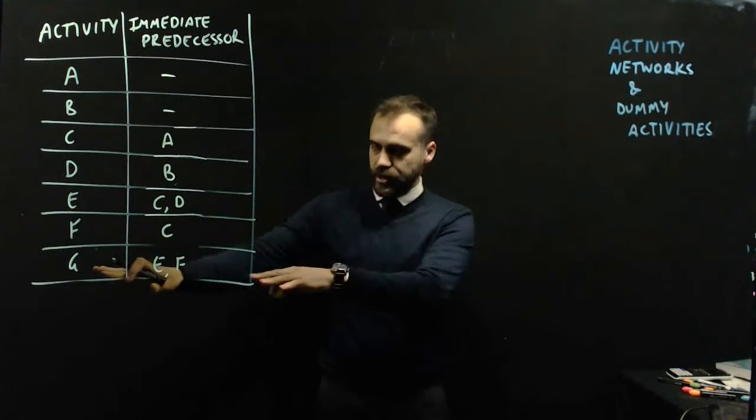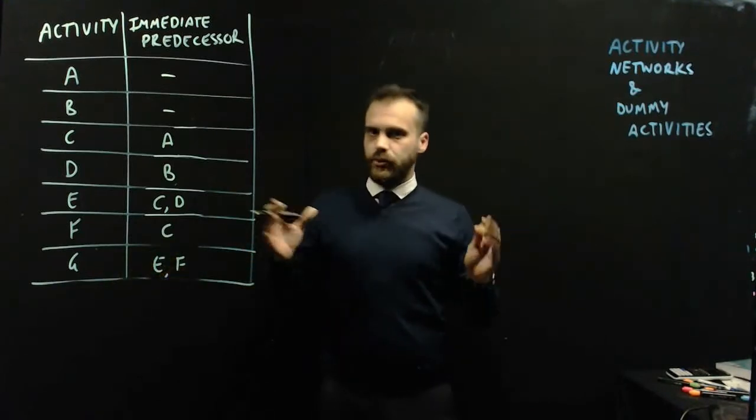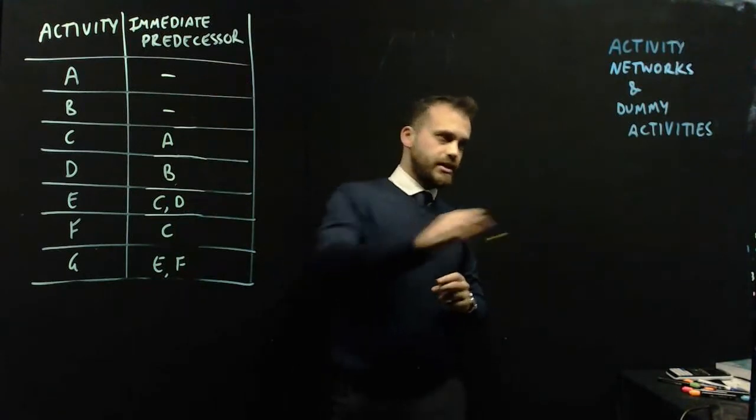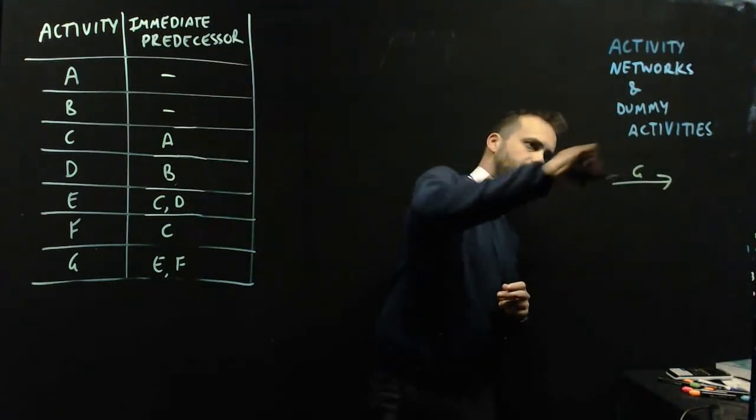Let's start at the finish and move back and see what we get. G is our only one that isn't a predecessor, so that's our final activity. There we have G.